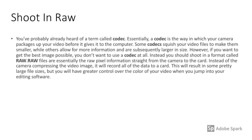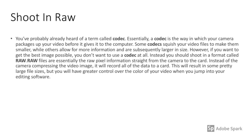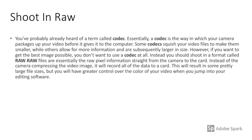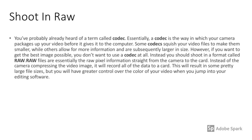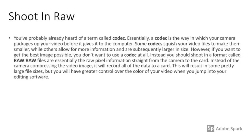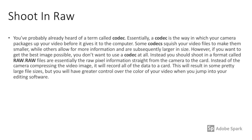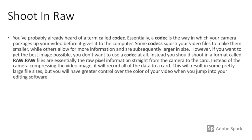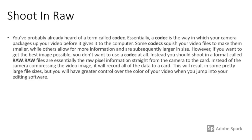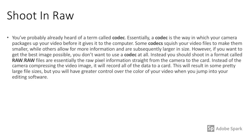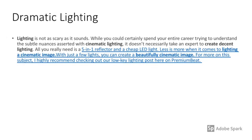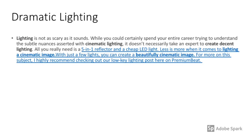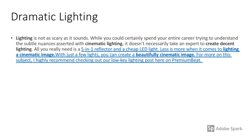The next tip is shoot in raw. You've probably already heard of a term called codec — essentially a codec is the way in which your camera packages up your video before it gives it to the computer. Some codecs squish your video files to make them smaller, while others allow for more information and are subsequently larger in size.